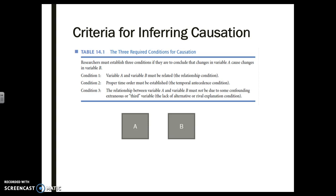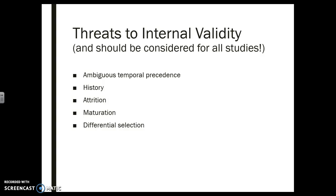Here's why: in order to say that A causes B, you first have to establish that A and B exist — not too hard — and that they're related — also not too hard. Here's what becomes hard: we have to establish that A comes before B and that B never comes before A. That is hard. And then the worst part is that we have to establish that there is absolutely nothing else that affects the relationship between A and B. There are so many threats involved, and you have to control for every little tiny aspect.